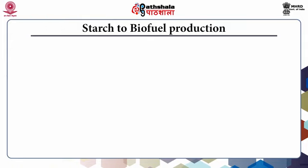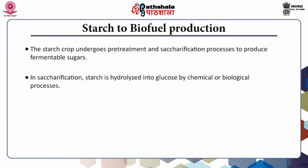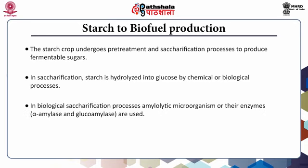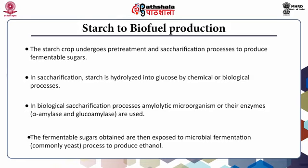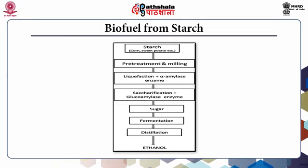Starch to biofuel production: the starch crop undergoes pre-treatment and saccharification to produce fermentable sugars. In saccharification, starch is hydrolyzed into glucose by chemical or biological processes — in biological saccharification, amylolytic microorganisms or their enzymes (alpha-amylase and glucoamylase) are used. The fermentable sugars obtained are then exposed to microbial fermentation, commonly yeast, to produce ethanol. This slide gives a schematic understanding of how biofuel — specifically ethanol — is produced from starch.